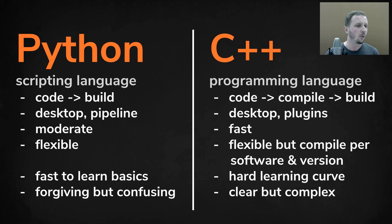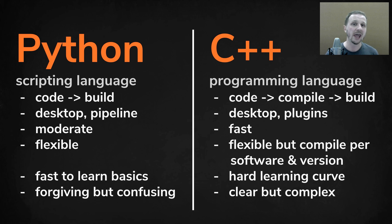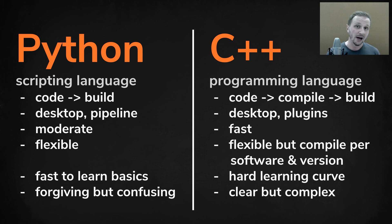With both you can create desktop applications like apps for Windows and Linux. Especially with Python it's mainly used as a pipeline scripting language since you can access all the APIs from all the DCC packages. With C++ you mainly use it to write software or plugins. C++ is quite fast, faster than Python, while Python is still a moderate speed but not as fast as C++.